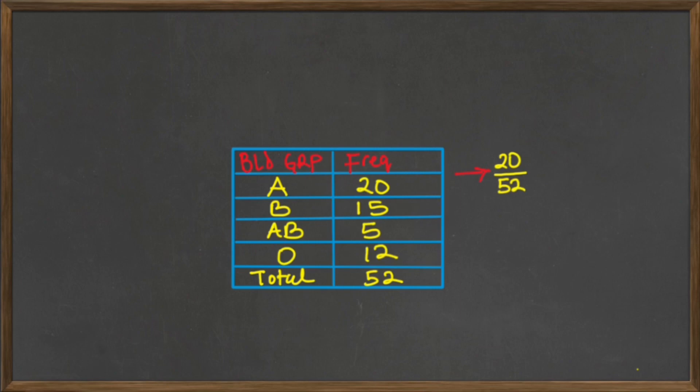20 individuals had blood group A out of 52 individuals that were at the hematology clinic that day. So what proportion of 360 degrees will be this 20 out of 52? So we're just simply going to say 20 divided by 52, and we're going to multiply this by 360 to know what proportion had blood group A.